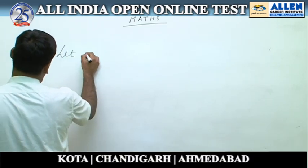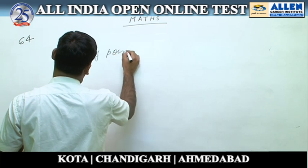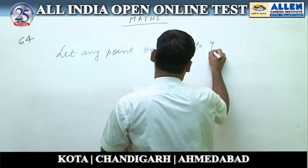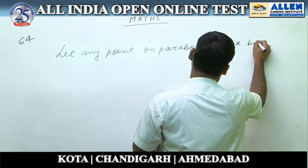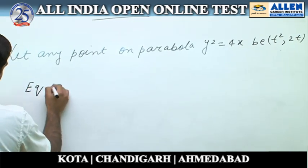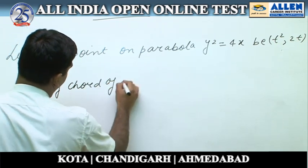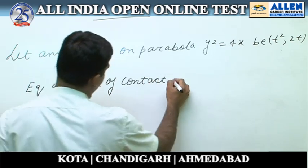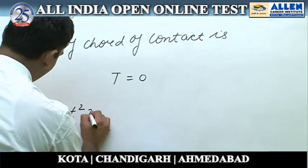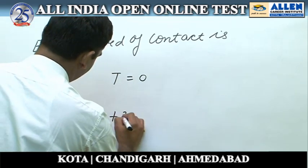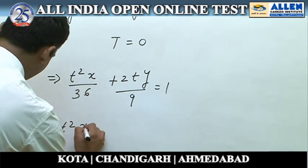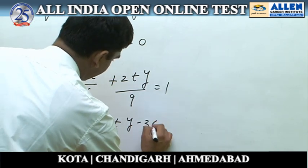Let any point on the parabola y squared equals 4x be (t squared, 2t). The equation of chord of contact is: t squared x by 36 plus 2t times y by 9 equals 1, which implies t squared x plus 8ty minus 36 equals 0.